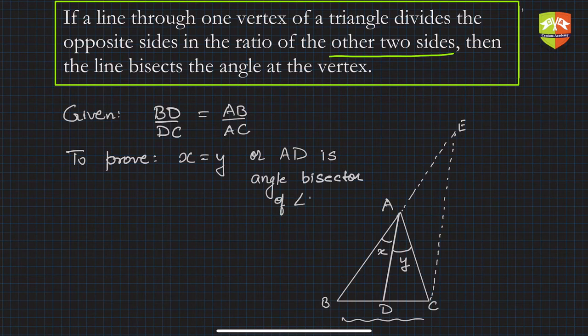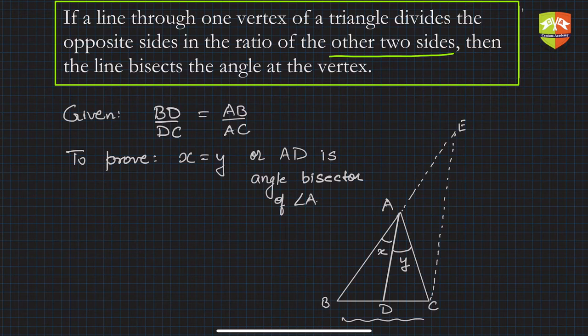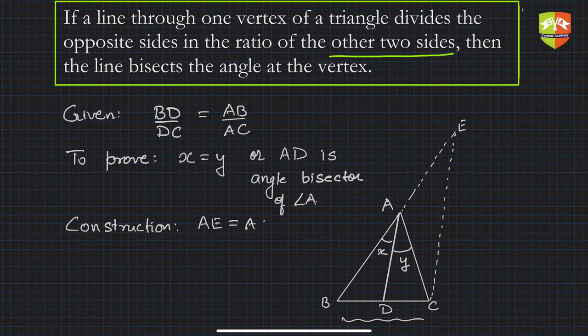Now there is a construction here. You can see there are ratios involved — BD by DC equals AB by AC. So if we try to use Thales' theorem, also called the Basic Proportionality Theorem (BPT), there is scope. So we sense a scope there and do some construction.